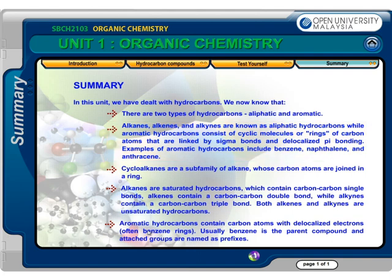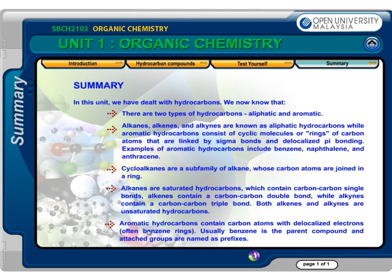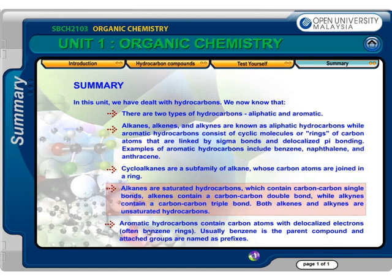3. Cycloalkanes are a subfamily of alkanes whose carbon atoms are joined in a ring. 4. Alkanes are saturated hydrocarbons which contain carbon-carbon single bonds. Alkenes contain a carbon-carbon double bond, while alkynes contain a carbon-carbon triple bond. Both alkenes and alkynes are unsaturated hydrocarbons.